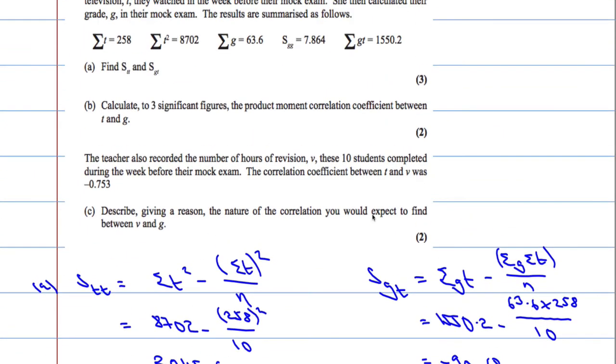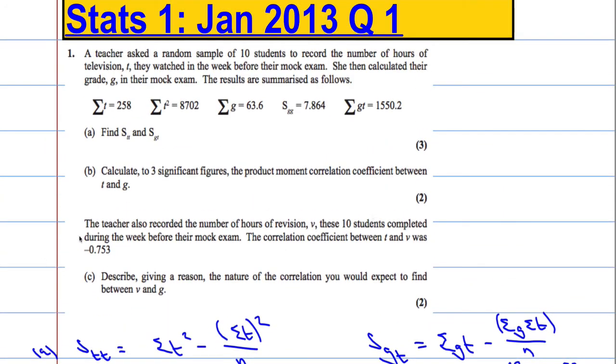So negative 0.715, and that's the three sig fig. You can write the whole thing down if you like. Okay, the teacher also recorded the number of hours of revision, V, the students completed during the week before their mock exam. The correlation coefficient between T and V was minus 0.753. Describe, giving a reason, the nature of the correlation you would expect to find between V and G.